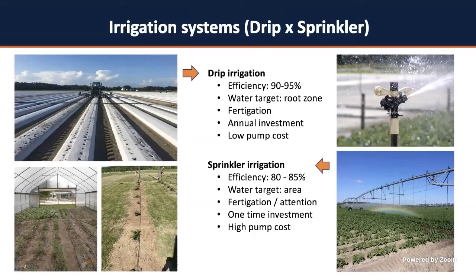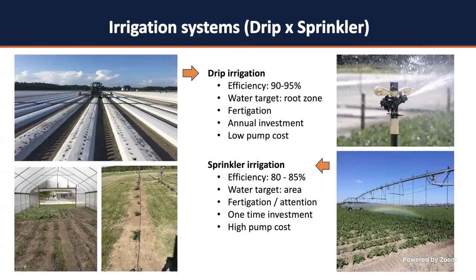Drip irrigation is an annual investment — every time you install a crop, you'll need a new drip line. However, it requires a low cost of pumping water. With sprinkler, you make the investment only once, but it's a very high initial investment that also requires a high pumping cost. So keep those pros and cons in mind.